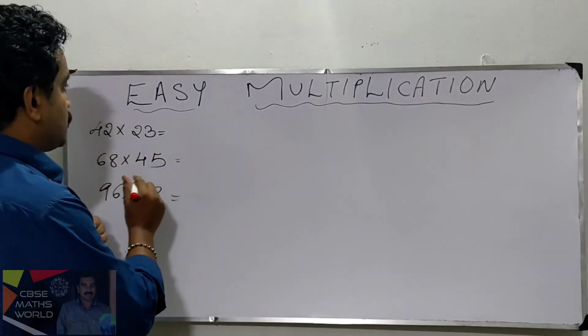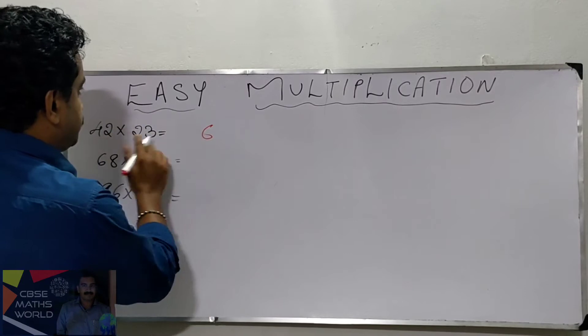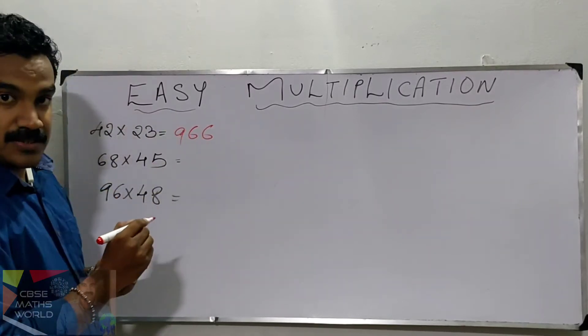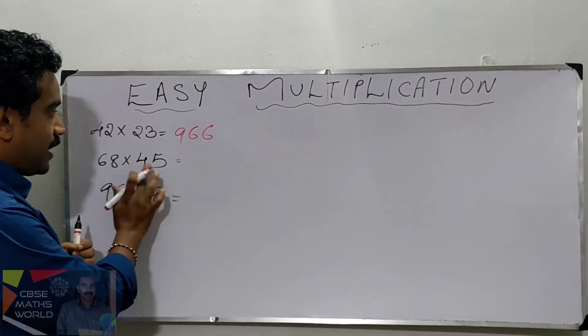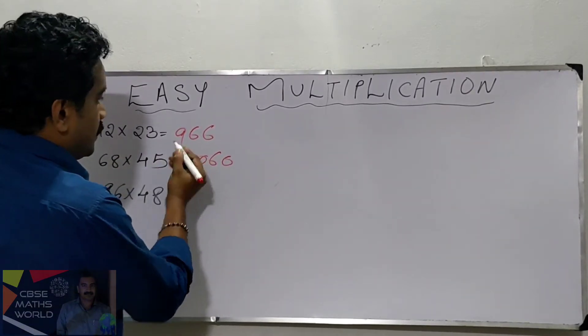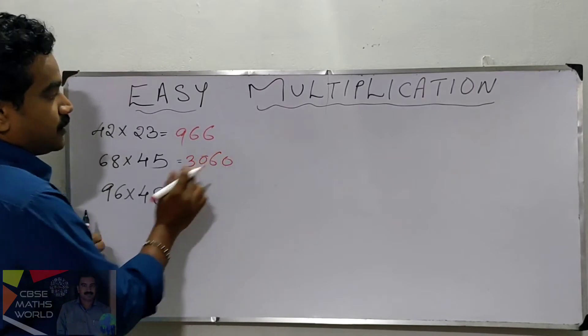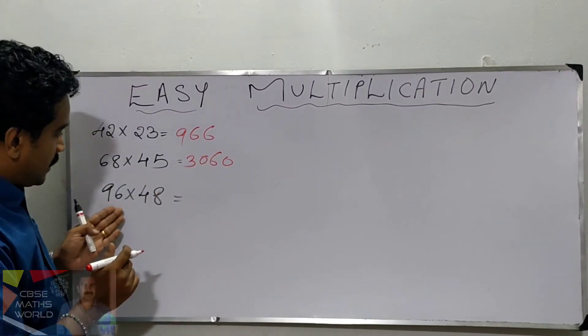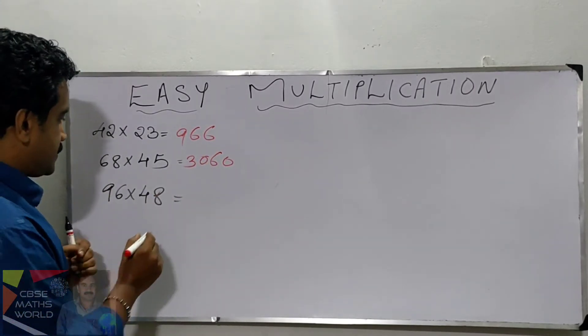What is 42 into 23? The answer is 966. Look at the second question: 68 into 45. The answer is 3060. Next question: 96 into 48. What is 96 into 48? 4608.